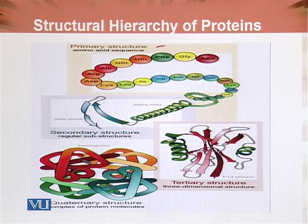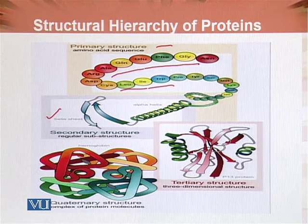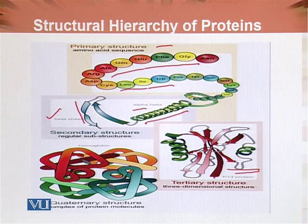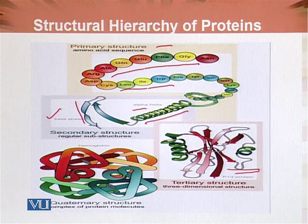Primary structure is where only the amino acid sequence is defined. In secondary structure, the amino acids can form a coil — these are known as alpha helix — and similarly, beta pleated sheets are formed. In tertiary structure, all these structures go into a three-dimensional configuration via their peptide bonds, forming the tertiary structure — but all of this is defined on a single peptide chain. If there are multiple polypeptide chains, as shown in this diagram, they will form the quaternary structure.